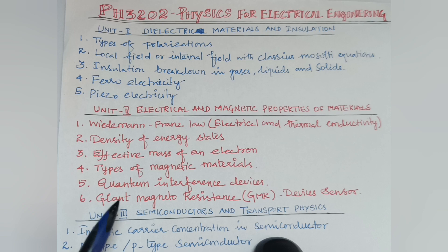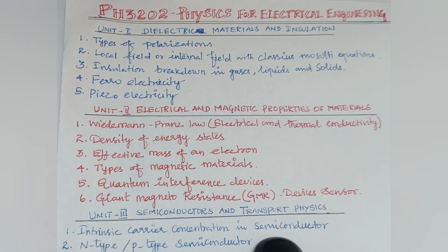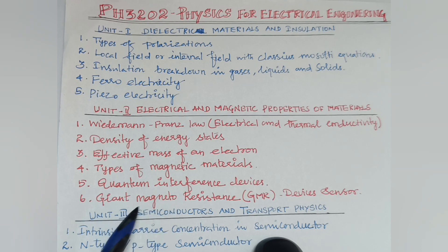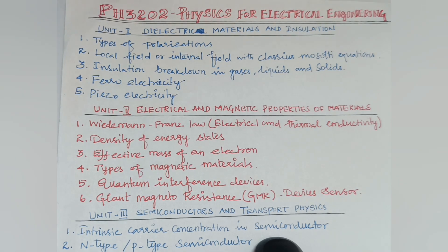The fifth question is Quantum Interference Devices, that is SQUID — Superconducting Quantum Interference Device. The sixth question is GMR, Giant Magneto Resistance, which is a type of sensor device. These are the important topics for Unit 2, questions one through four.